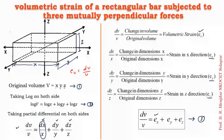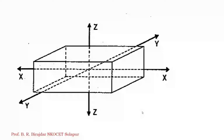So the volumetric strain eV equals eX plus eY plus eZ. To find the volumetric strain, we calculate the strain in x, y, and z directions and add all three together.